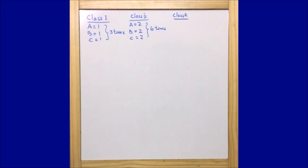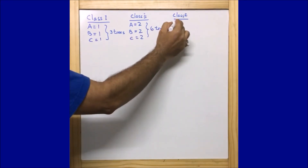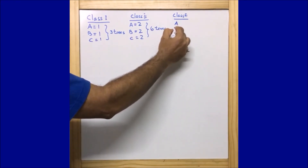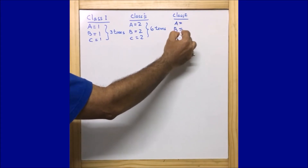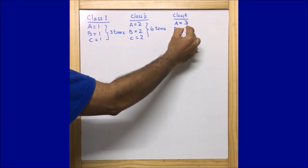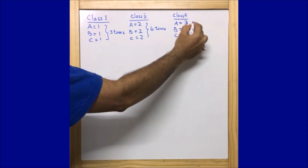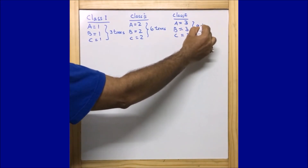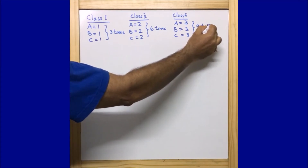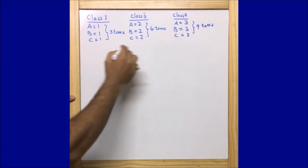Similarly, for Class 3, sections A, B, and C each plant three trees. So altogether Class 3 plants nine trees. If we continue this trend for all classes up to Class 12, we can see the pattern clearly.